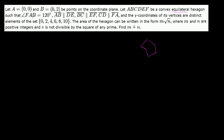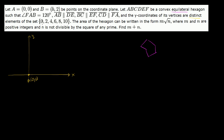So really the first part, let's just make sure we can visualize this hexagon. We know one vertex: A = (0, 0). Let me draw my x-axis and y-axis. We know that the vertex A sits at the point (0, 0). Now we know that all of the vertices have y-coordinates that are either 0, 2, 4, 6, 8, or 10, and they are distinct members of the set, meaning no two of the vertices share the same y-coordinate — so they're not going to be on the same horizontal lines.